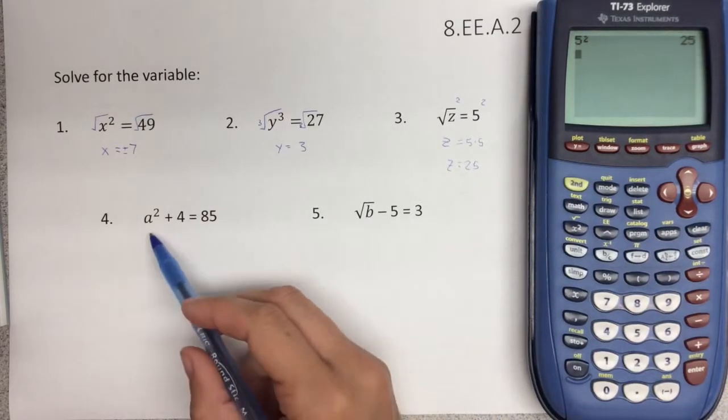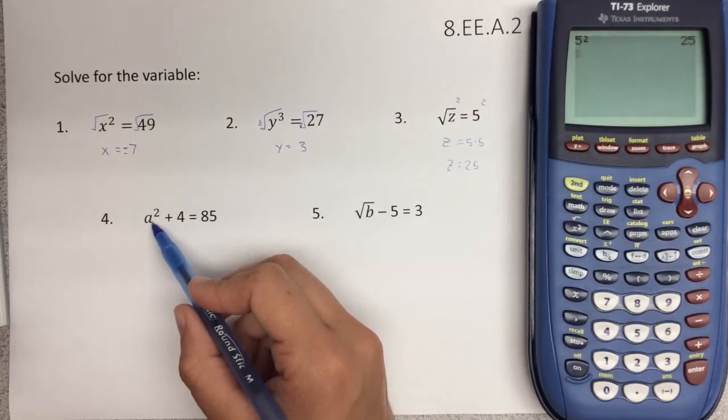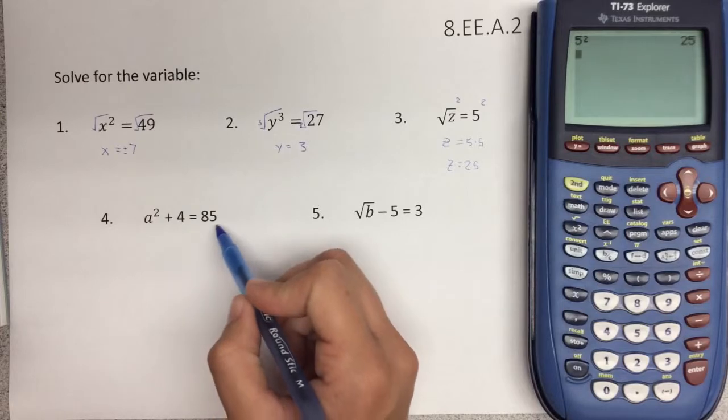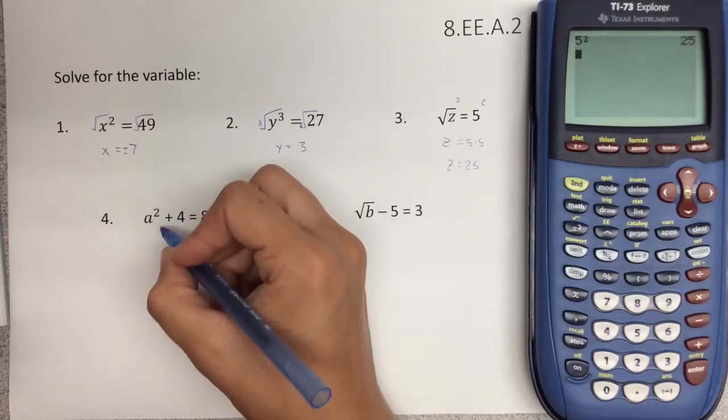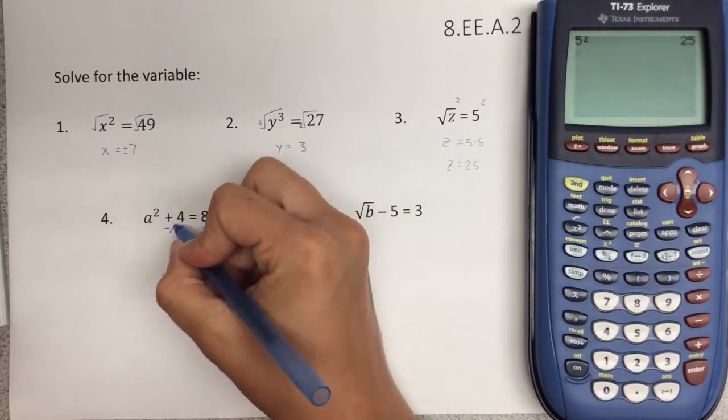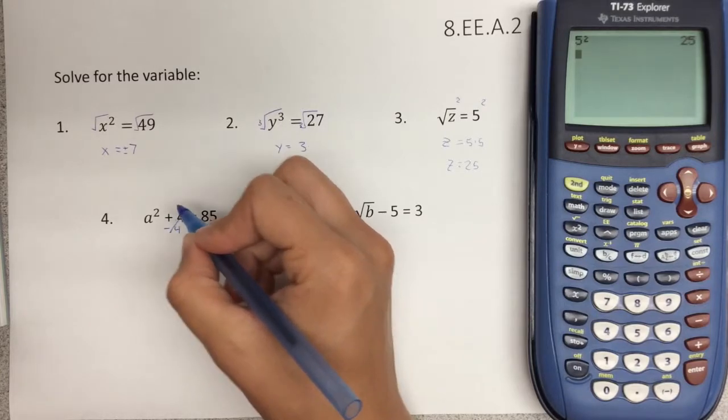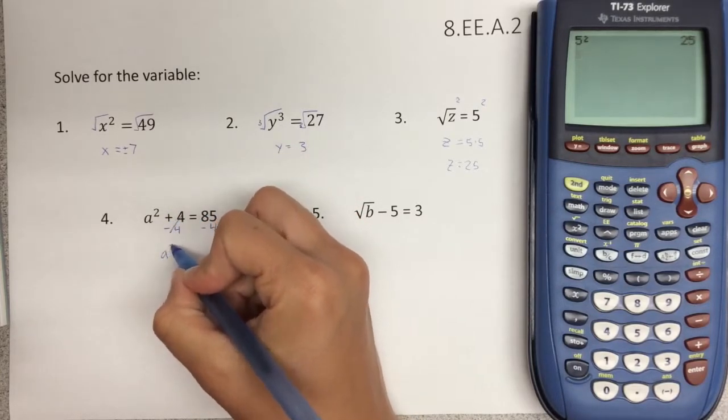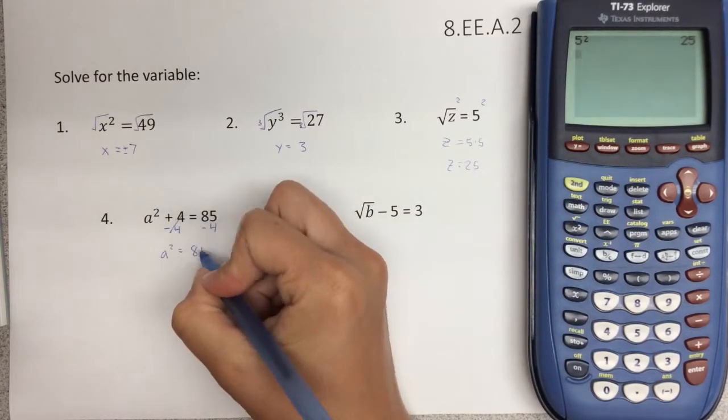For number four, we have a squared plus 4 equals 85. In order to isolate a squared, or a, which is our main goal, we have to bring this 4 to the other side. It has to be with the other number. So the opposite of adding is subtracting. So to do the inverse operation, we're going to subtract 4 from both sides. Positive 4 and negative 4 goes to 0. So on the left-hand side, we're left with a squared equals. And then on the right-hand side, 85 minus 4 is 81.